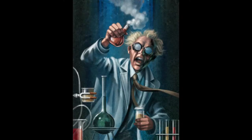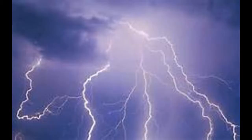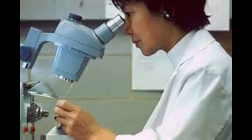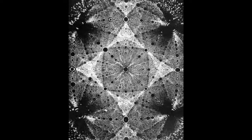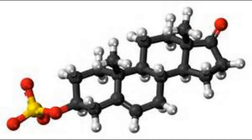MnO4- is permanganate, HCO3- is hydrogen carbonate, HSO3- is hydrogen sulfite, HSO4- is hydrogen sulfate, and H2PO4- is dihydrogen phosphate.